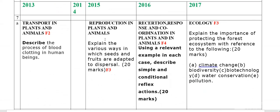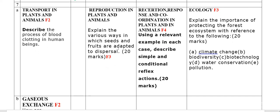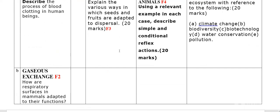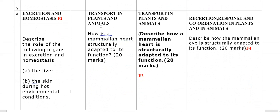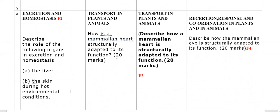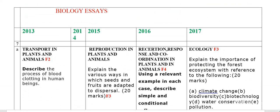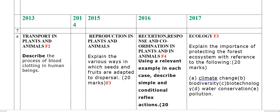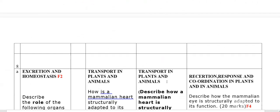The 2015 essay was on reproduction in plants and animals — you can see the question there. Question 8 was transport in plants and animals: how is the mammalian heart structurally adapted to its function? 20 marks. In 2016, the essay was on reception, response, and coordination in plants and animals: describe simple and conditional reflex using relevant examples — 20 marks. Number 8 in 2016 was also transport: describe how the mammalian heart is structurally adapted to its function — 20 marks. You can see this question was repeated across years.